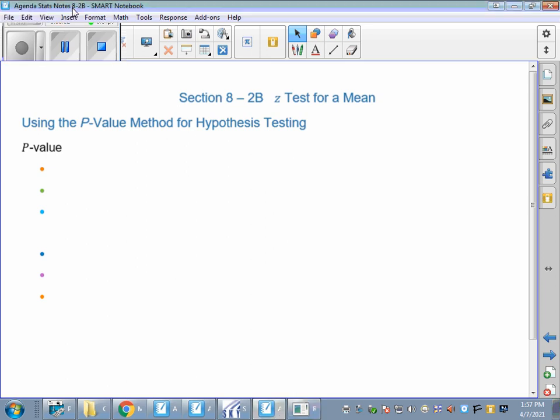Hi STATS students. Let's finish up section 8.2. We've been doing z-tests for a mean. We did 8.2a with the traditional method. Now we're going to use the p-value method. Some of you are going to prefer this.